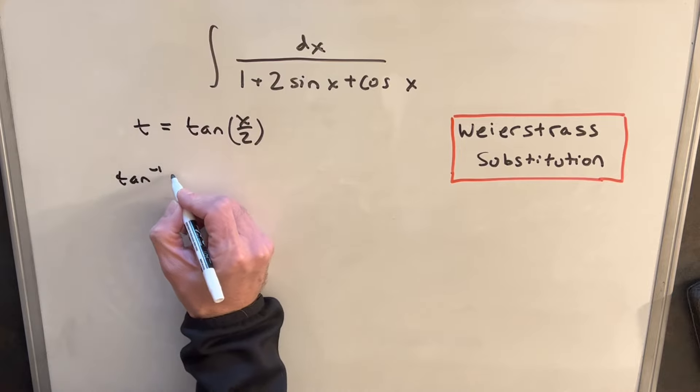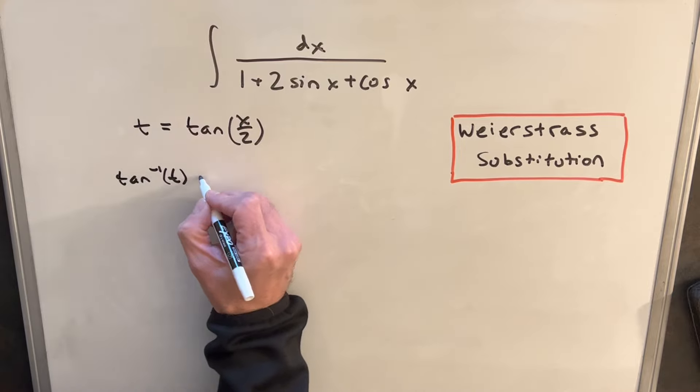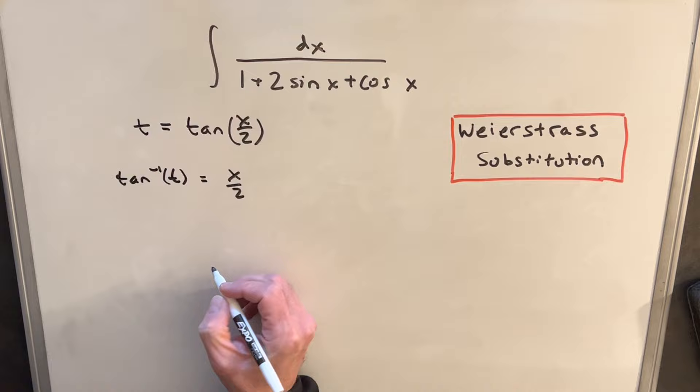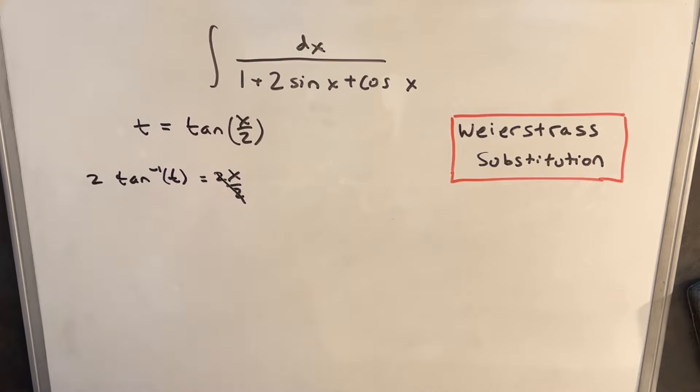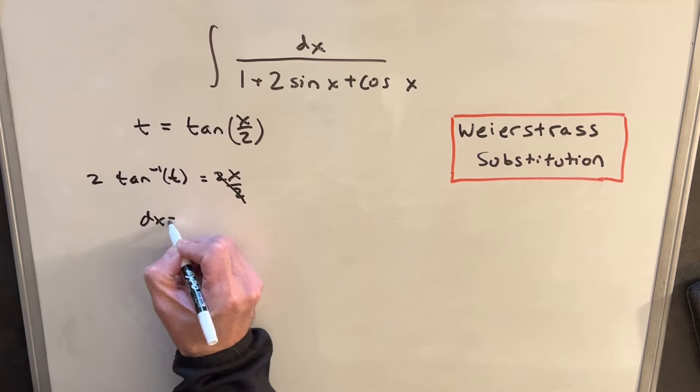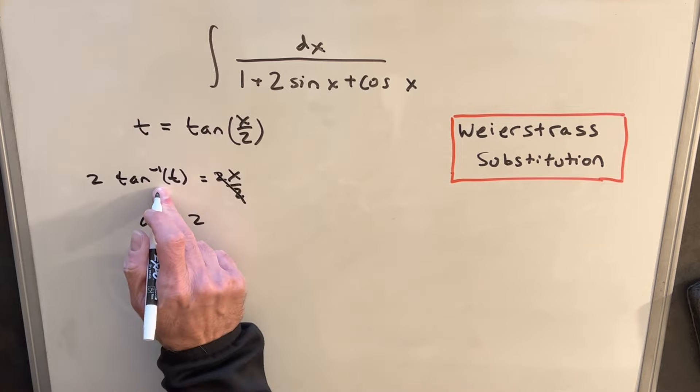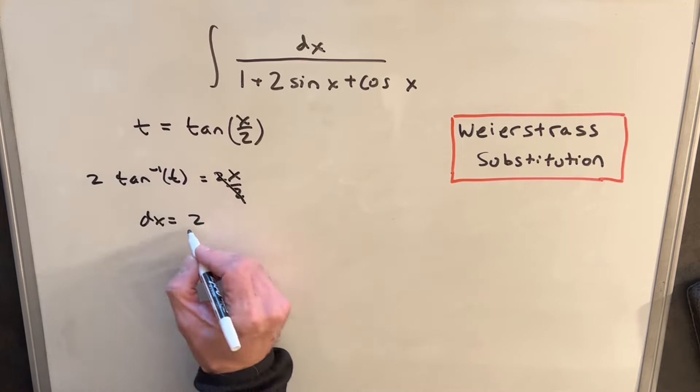So I can rewrite this as, just using the inverse, we can write it as tan inverse of t equals x over 2, but then just multiplying by 2 on both sides, we have x equals 2 tan inverse of t. Taking the derivative, I'm going to have dx equals 2 times the derivative of tan inverse, which is just 1 over 1 plus t squared.